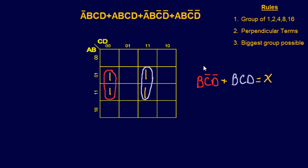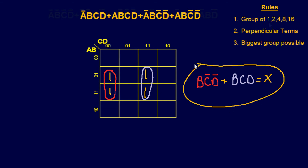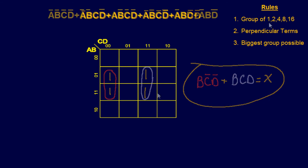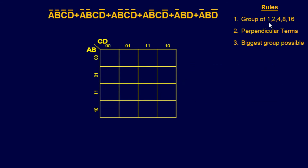That took less than six minutes, so that'll be our final answer. This next one looks a little more tedious because we have a mix of variables. We'll attack it one term at a time. Starting with A-not, B-not, C-not, D-not — that gives us a one in that cell. Next, A-not, B-not, C·D-not — there's a one. That fills those two cells.